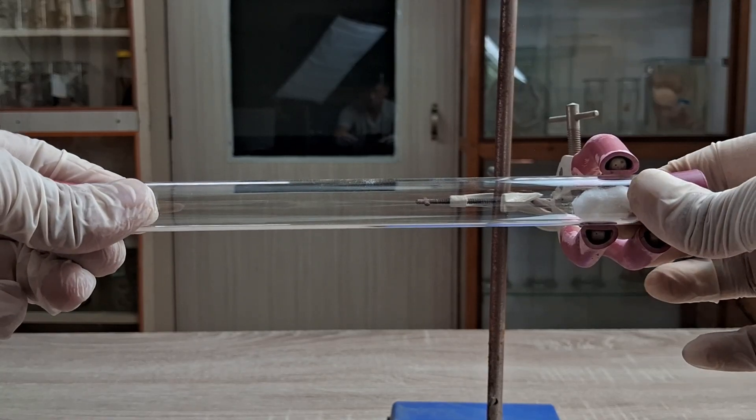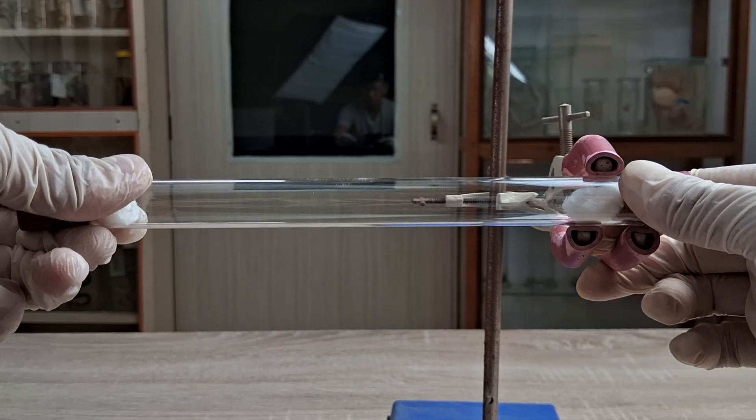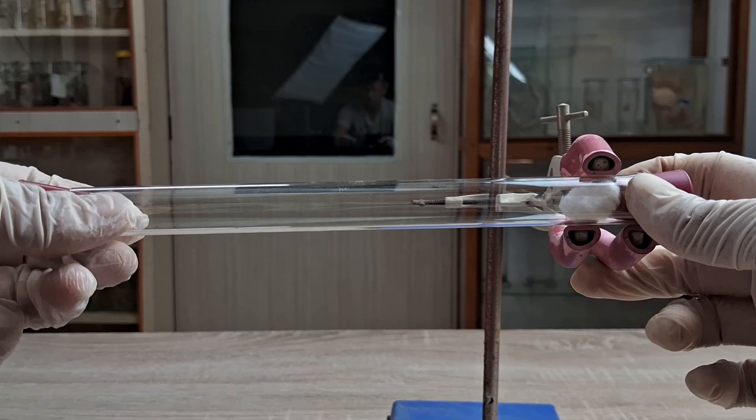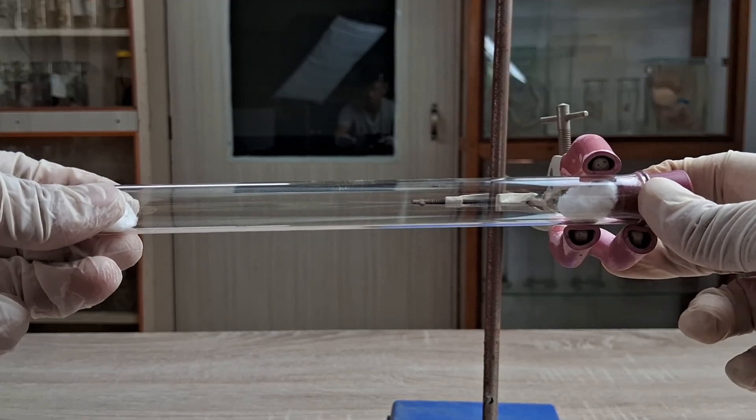As soon as you introduce the two cotton balls into the tube and secure the rubber stoppers, you will observe a thin white cloud ring starting to form somewhere towards the cotton ball dipped in hydrochloric acid in the glass tube.